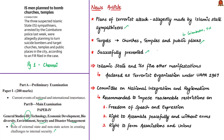Know that the Islamic State and its five other manifestations or variants have been declared as terrorist organizations under the Unlawful Activities Prevention Act of 1967. In the 1960s, the Committee on National Integration and Regionalism gave a unanimous recommendation to impose reasonable restrictions on the freedom of speech and expression, the right to assemble peacefully, and the right to form associations or unions. Based on this recommendation, the UAPA of 1967 was enacted to deal with activities directed against the integrity and sovereignty of India.